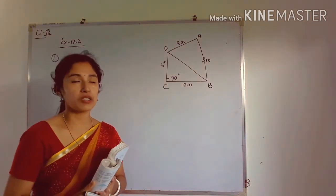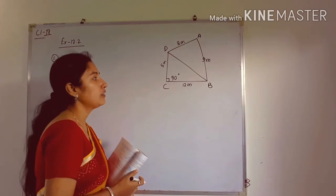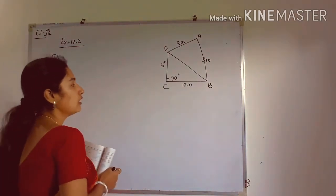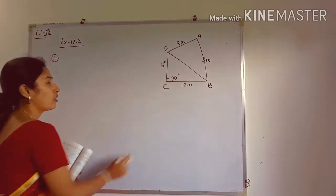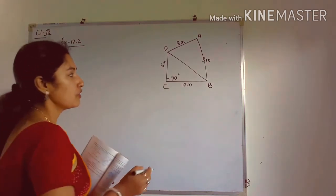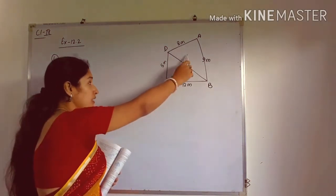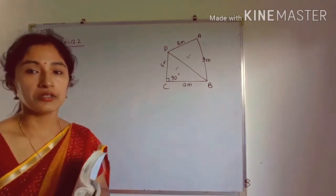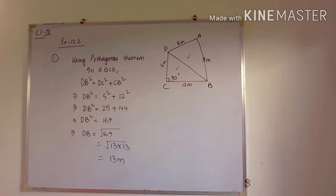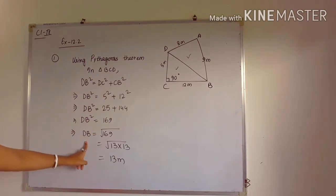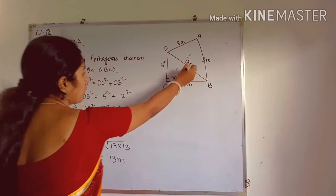Using the Pythagoras theorem, we can find the third side of a triangle if two sides are given. We will use this to find the hypotenuse, since the side opposite the 90-degree angle is the hypotenuse. After applying the formula — hypotenuse squared equals perpendicular squared plus base squared — and putting in the values, we get the hypotenuse BD = 13 meters.